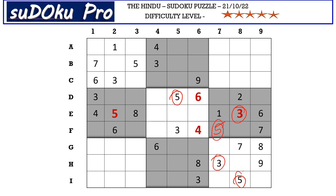These two three-and-five pairs block these two columns, and we have a three-and-five pair in B row blocking here, so three and five go in these two cells. We have three blocking from the block, so C9 takes five and A9 takes three.